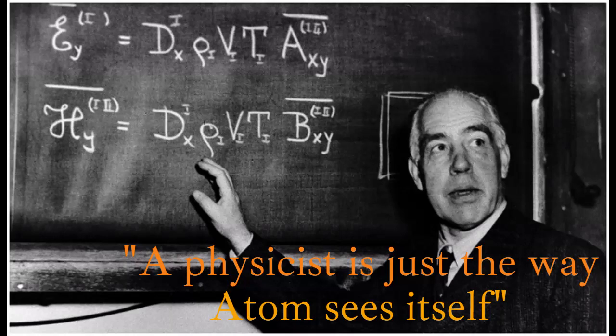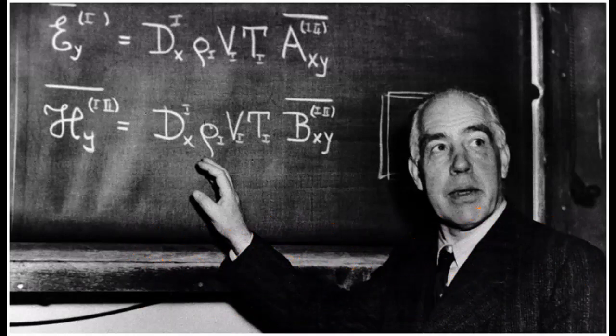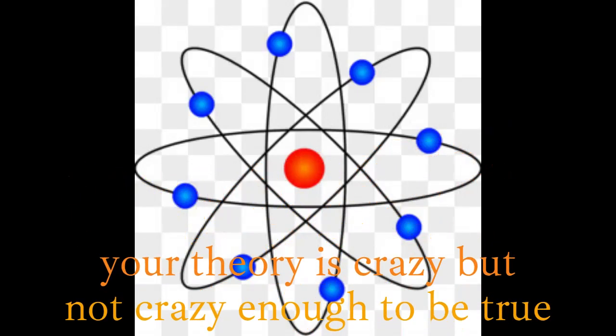Born into an educated family, Niels Bohr was excited to continue his education. In 1903, Niels Bohr began his undergraduate education at the University of Copenhagen, where his father worked. He also completed his doctoral education there in 1911, earning a doctorate in physics. He then continued his education to Cambridge, England, wanting to study at the Cavendish Laboratory.